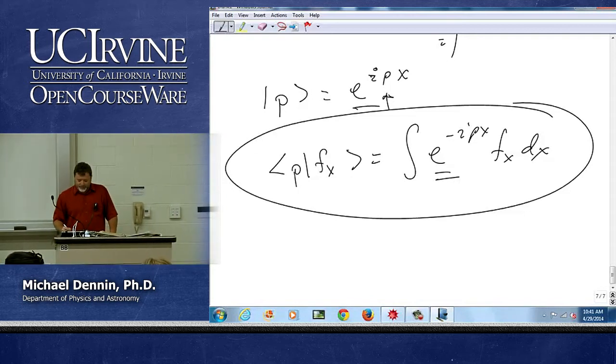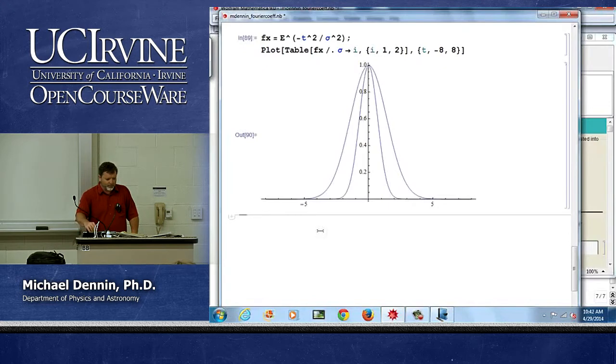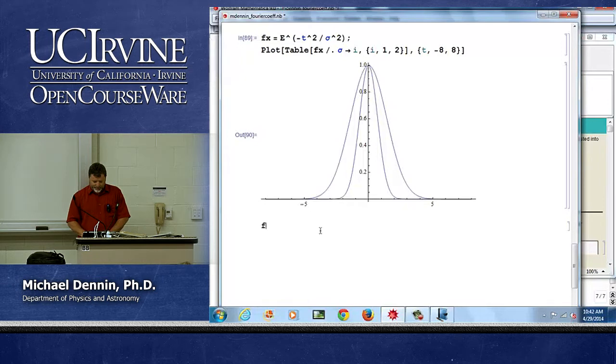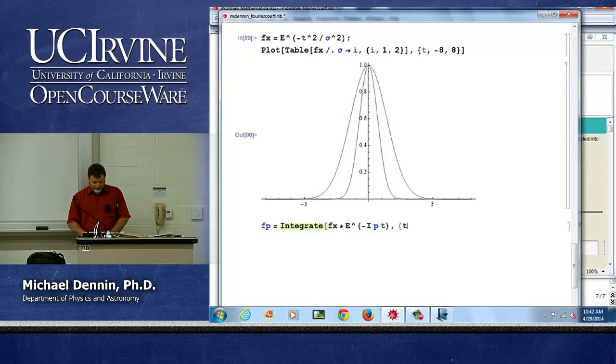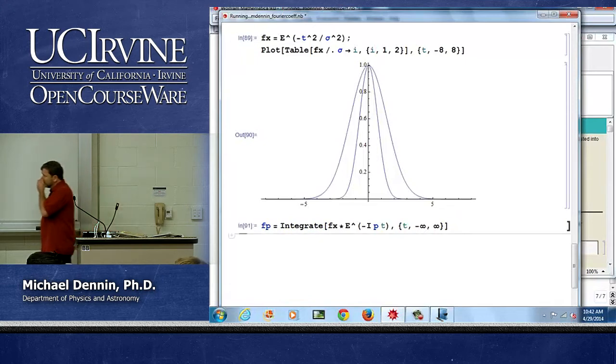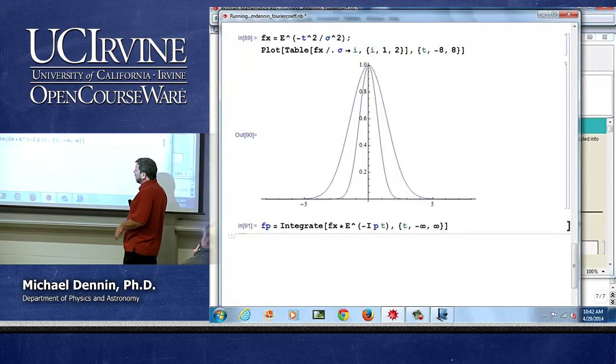What does that do when we have Gaussians? Well, if I do this integral, let's call it fp equals the integral of fx times e to the minus i pt. I apologize for using p for t, but I'm going to keep using t because that's what I did. And now we get to integrate from t from minus infinity to infinity. It's taking a while. It's chugging along. I was faster on my PC.